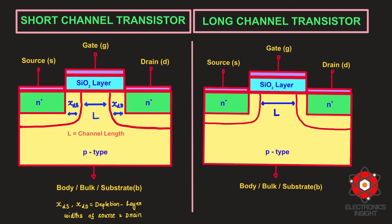Here I would like to remind you of the difference between the long channel transistor and the short channel transistor. The channel exists between the source and drain, and that channel length is denoted by capital L. In a short channel transistor, the channel length is approximately equivalent to the summation of the drain depletion width and the source depletion width.